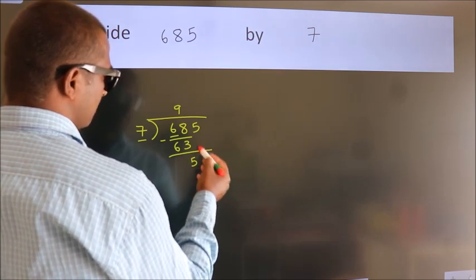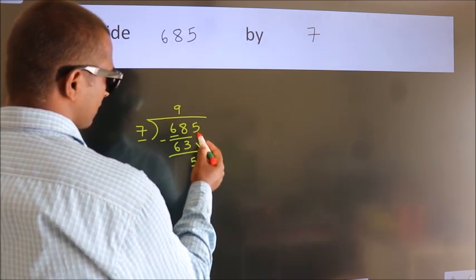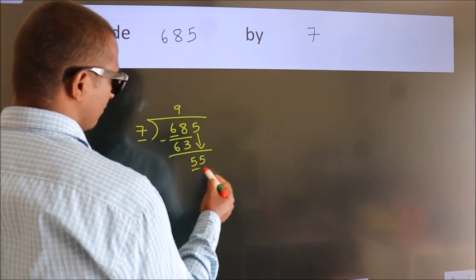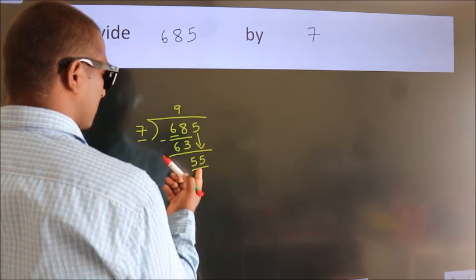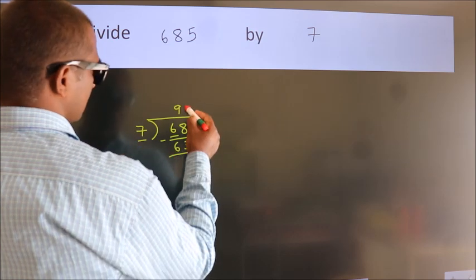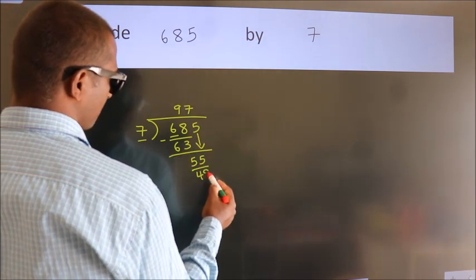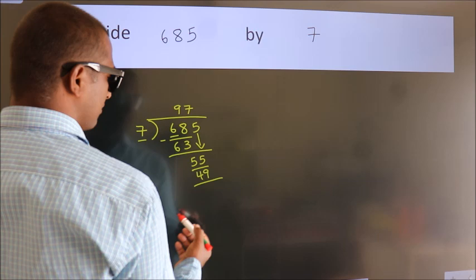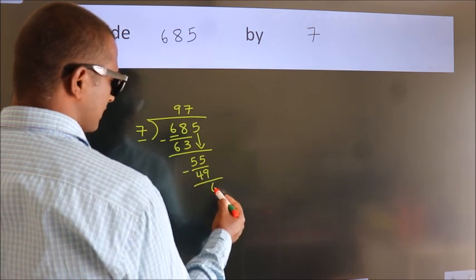After this, bring down the beside number. So, 5 down. 55. A number close to 55 in the 7 table is 7 sevens, 49. Now we subtract. We get 6.